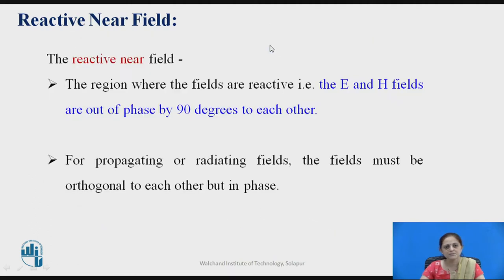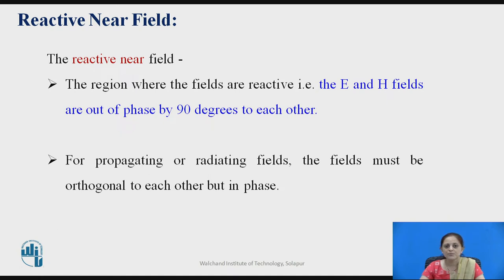The reactive near field is the region where the fields are reactive — that is, the electric field and the magnetic field are not perpendicular to each other. These two are out of phase by 90 degrees. For propagating or radiating fields, the fields must be orthogonal to each other.